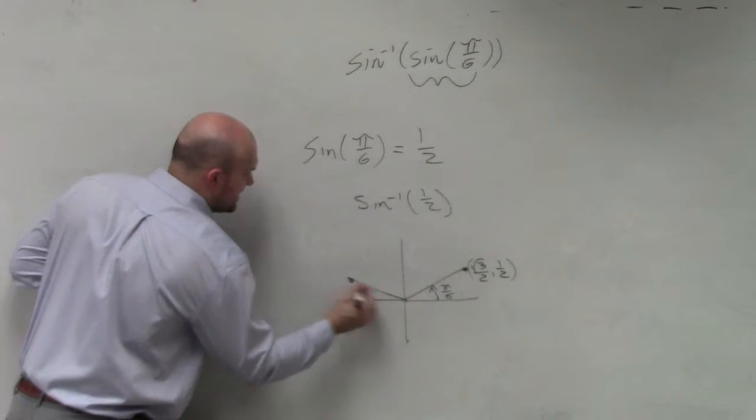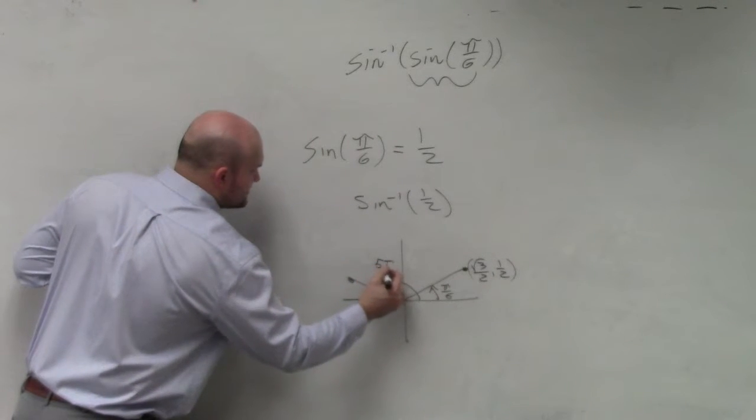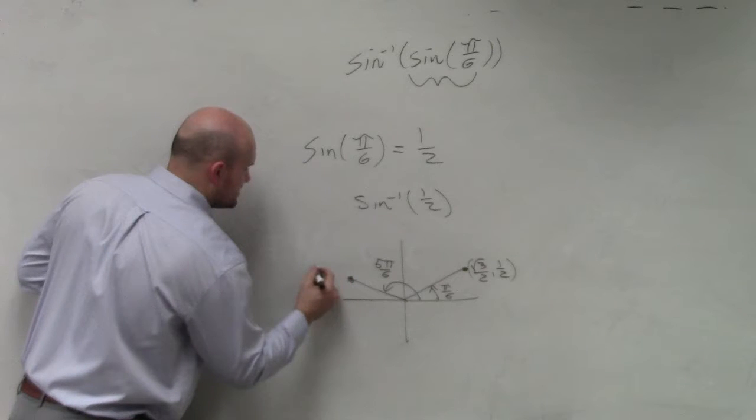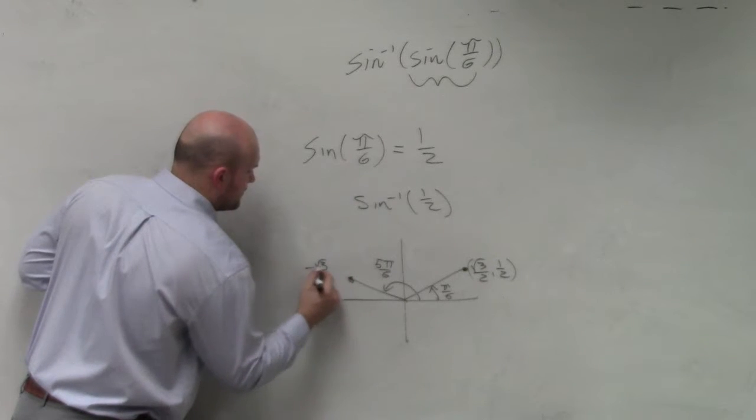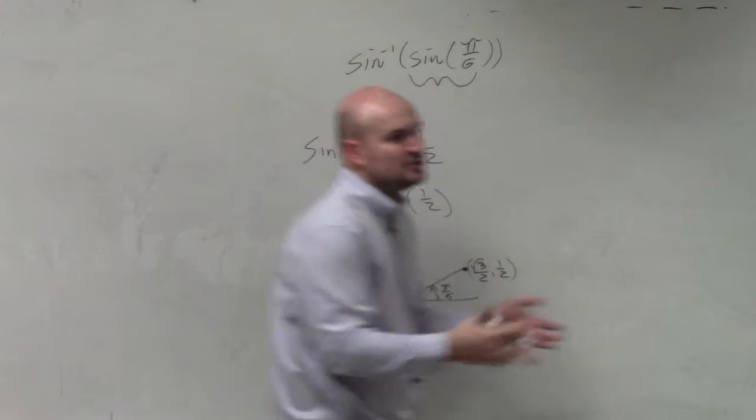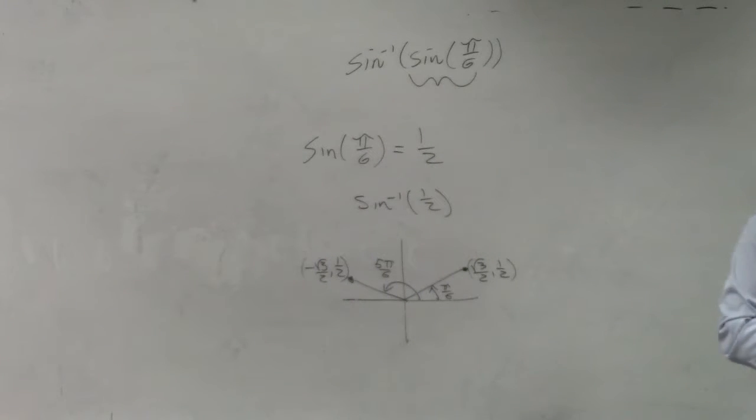We also know that this angle, 5 pi over 6, also produces 1 half. Those are two different angles where the y-coordinate equals 1 half. So which one is the correct answer?